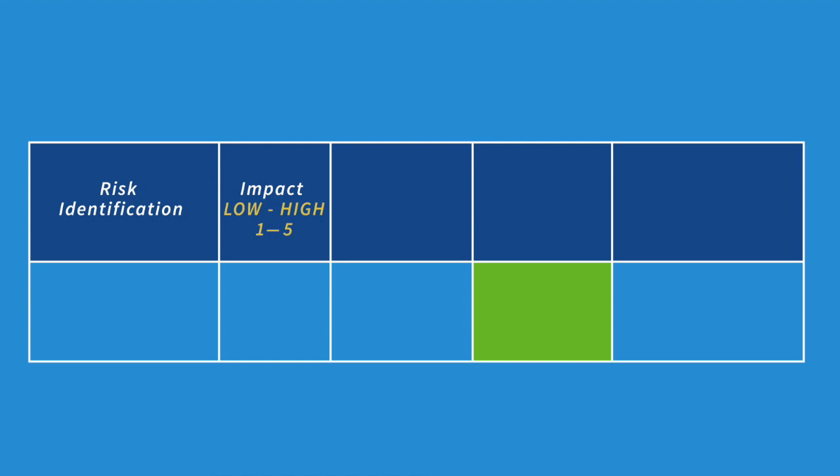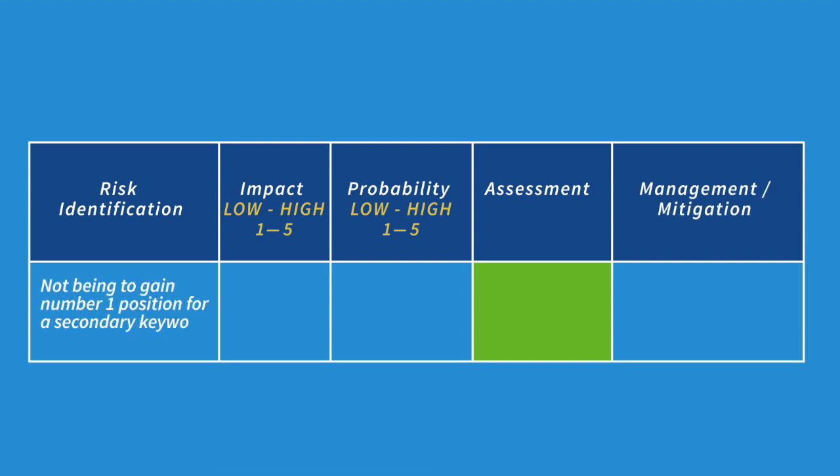And 5 is where the impact could be catastrophic, making a huge difference to whatever you're trying to achieve. We then think about the probability of that risk actually happening. This could also be quantified from 1 to 5, where 1 is very unlikely and 5 is very likely. Then you multiply the probability by the impact scales to get the overall risk assessment.